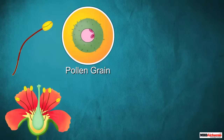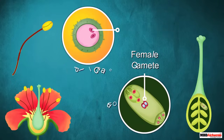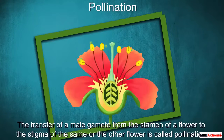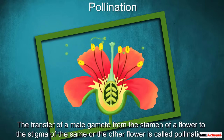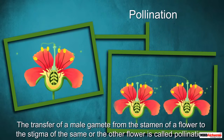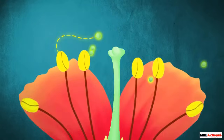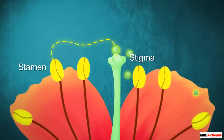For that, the male gametes have to reach the female gametes. First, a pollen grain carrying the male gametes is transferred from the stamen of a flower to the stigma of the same or another flower. Such transfer of pollen grains is known as pollination.